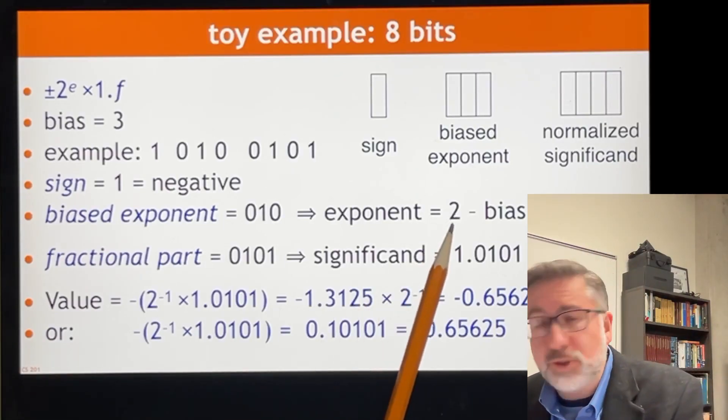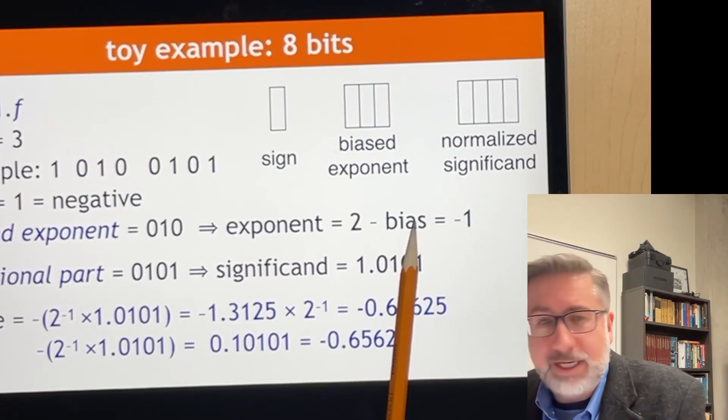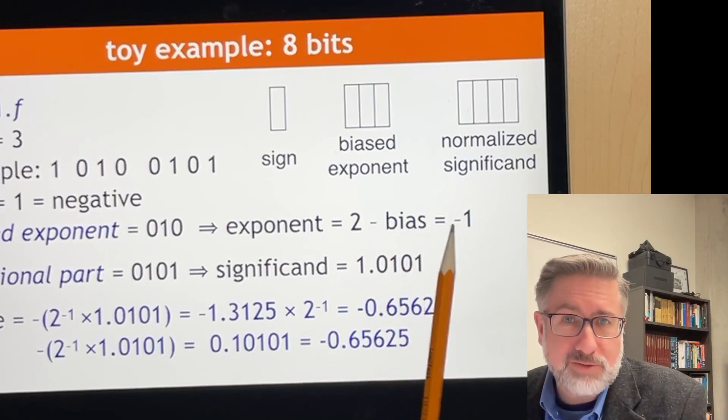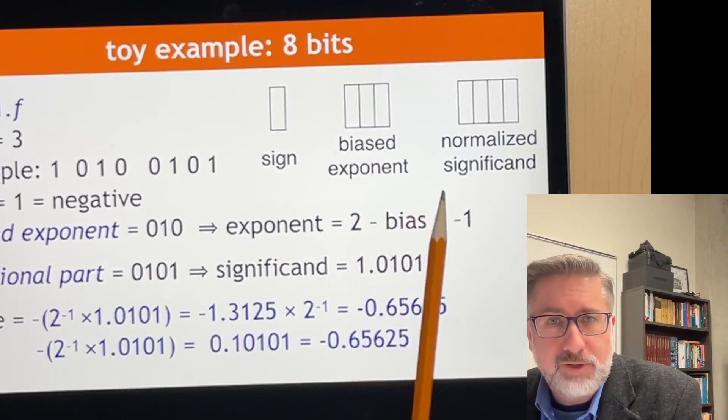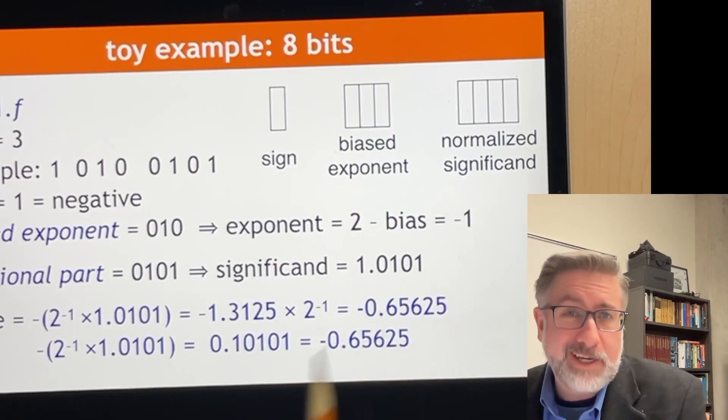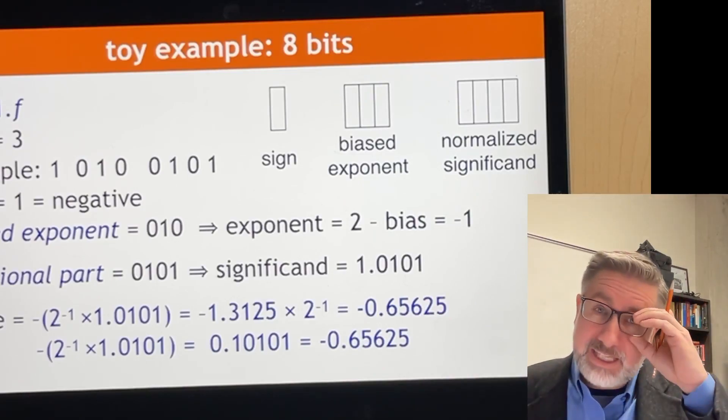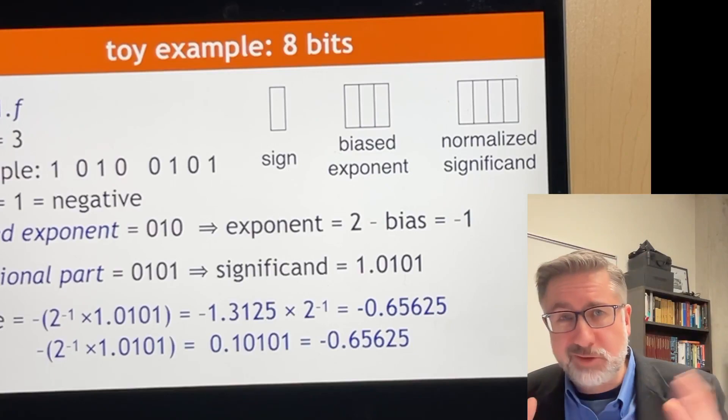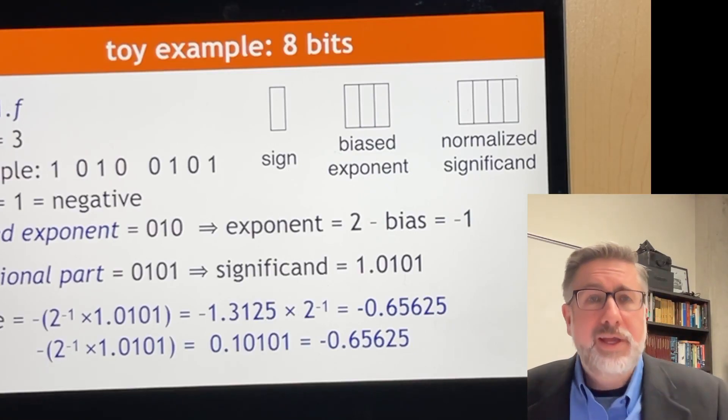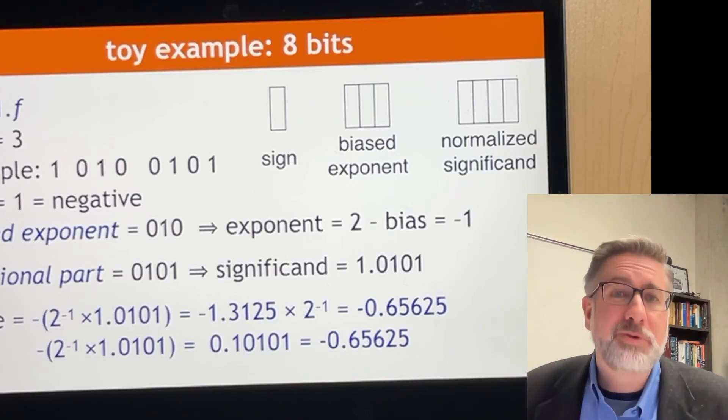So if we store the number 2 in the exponent, it represents 2 minus the bias, which is negative 1, because 2 minus 3 is negative 1. So when the number 2 is stored in here, 0, 1, 0, that represents an exponent of negative 1. So the biased exponent is a little tricky to think about, but basically all you have to do is take a number that's in the middle of the exponent range, 0 to 7, 3 is more or less in the middle, and subtract that from the number that's represented, and that's how you get your number that it represents.